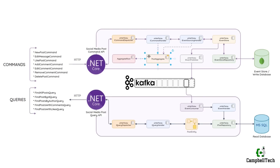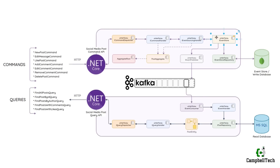This command handler method will then create a new post aggregate instance that extends the aggregate root. Within the post aggregate's constructor, once the new post command has been handled, it'll raise the post created event that will alter the state of the aggregate. The command handler will then pass the post aggregate instance to the event sourcing handler.